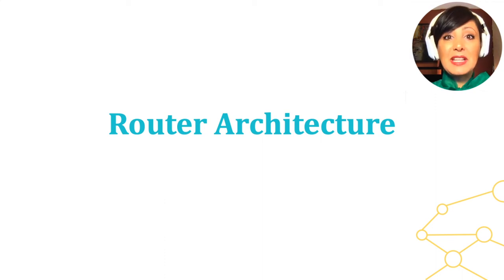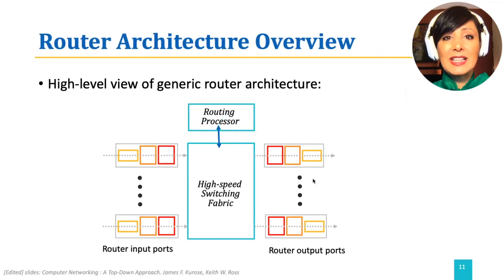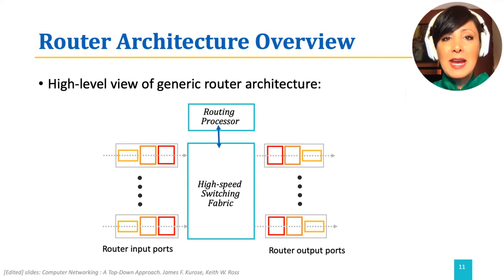Let's start with examining the general architecture of a router before we jump into the details of routing and forwarding functions. A high-level view of a router architecture is depicted in this picture. Let's explore the four main components we observe here.